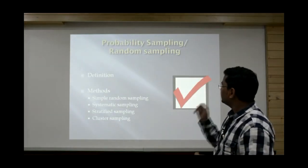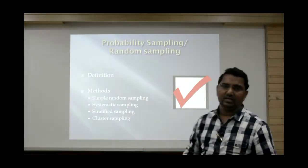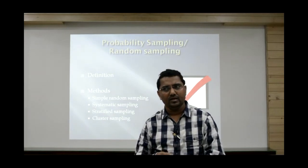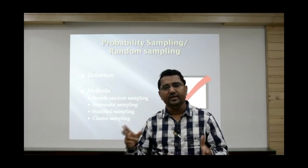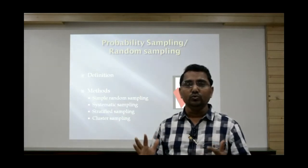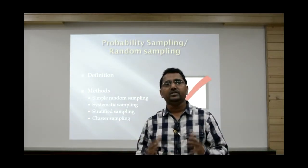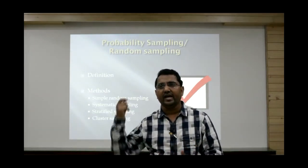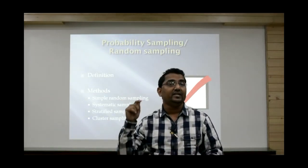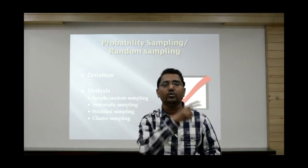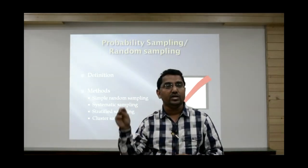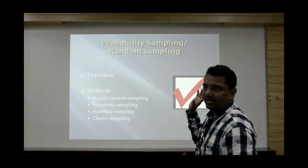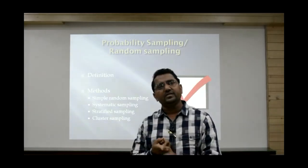The first method is simple random sampling. As the name suggests, it is a very simple method to draw a sample from the population. However, it has a limitation: simple random sampling is used only when the population is small and homogeneous — meaning the characteristic being observed is uniformly distributed throughout the population.